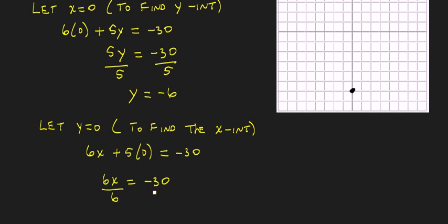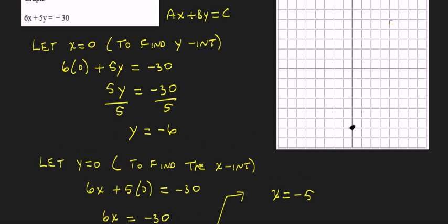And we solve by dividing both sides by 6. And we get that x equals negative 30 divided by 6 is negative 5. And so that's the x-intercept.